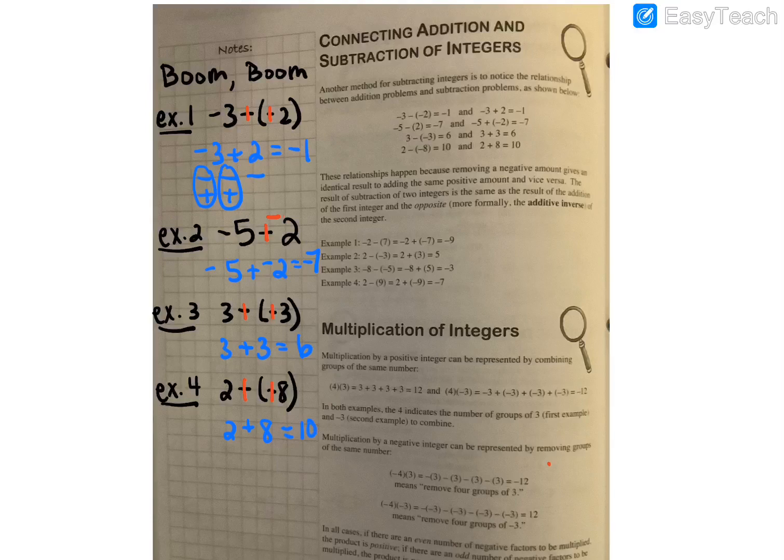Okay, so remember every time it's boom, boom. You have to be doing one boom and a second boom. You're changing subtraction to addition and then changing the sign of the second number.